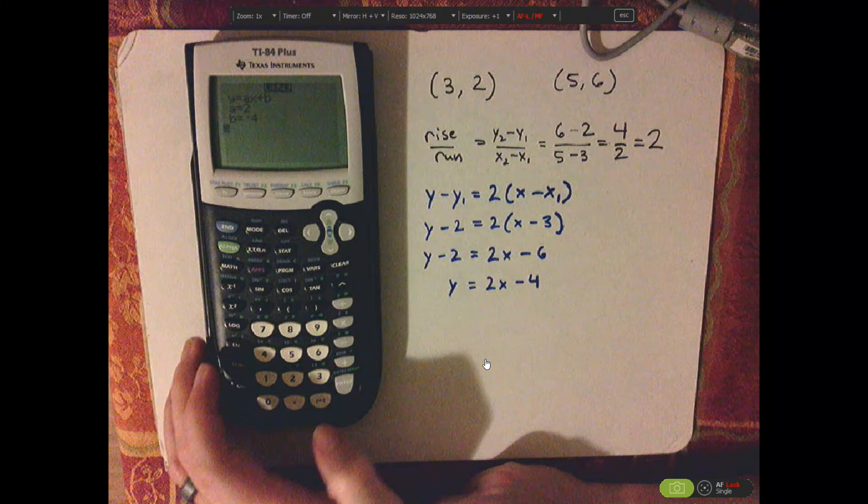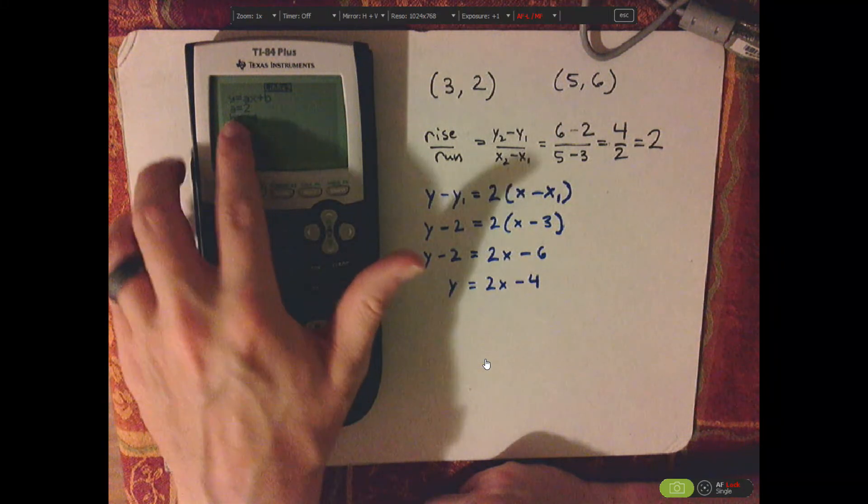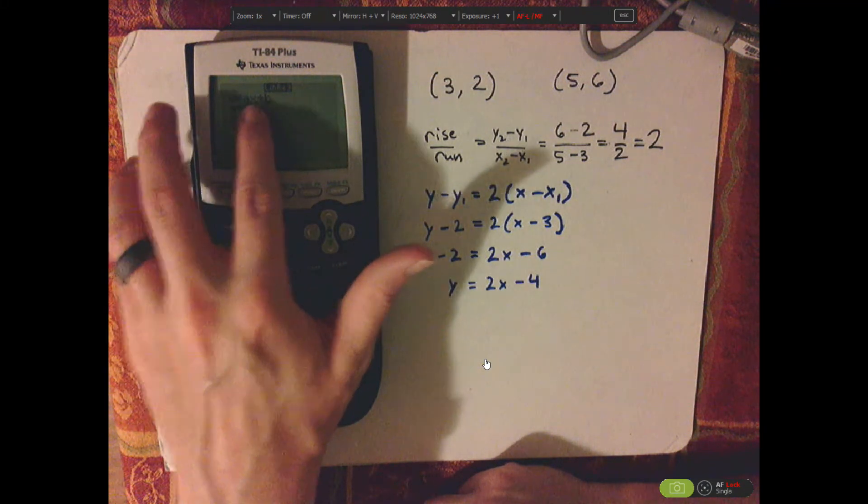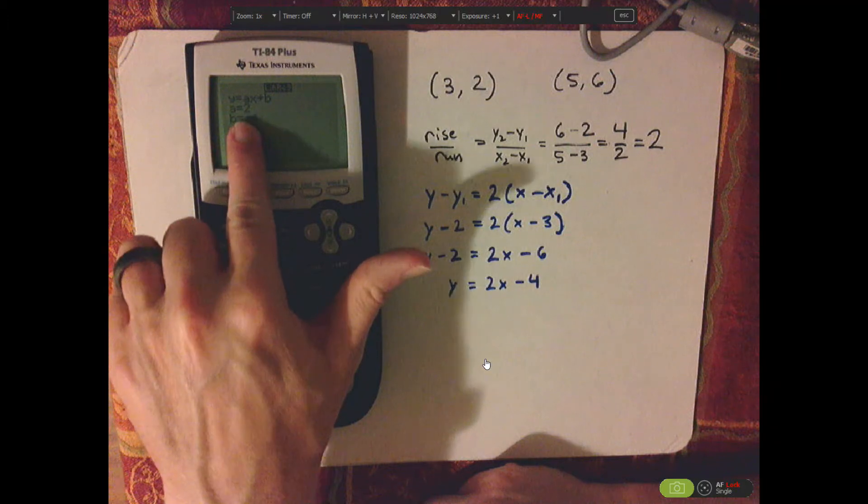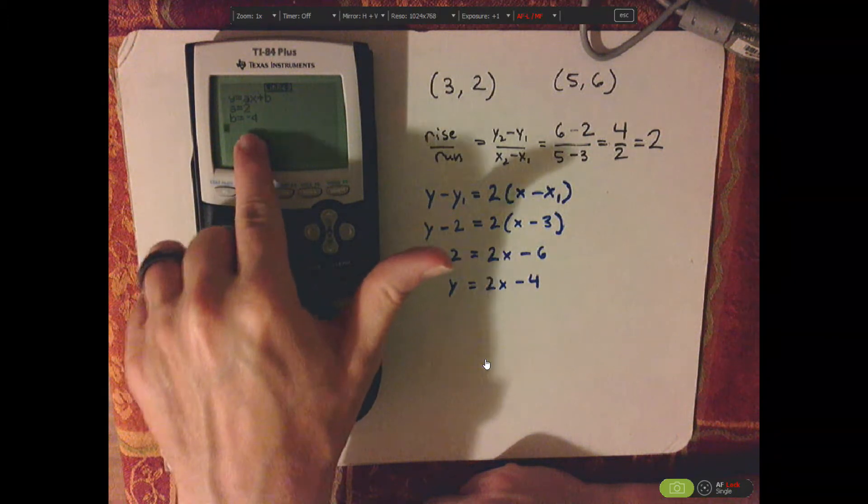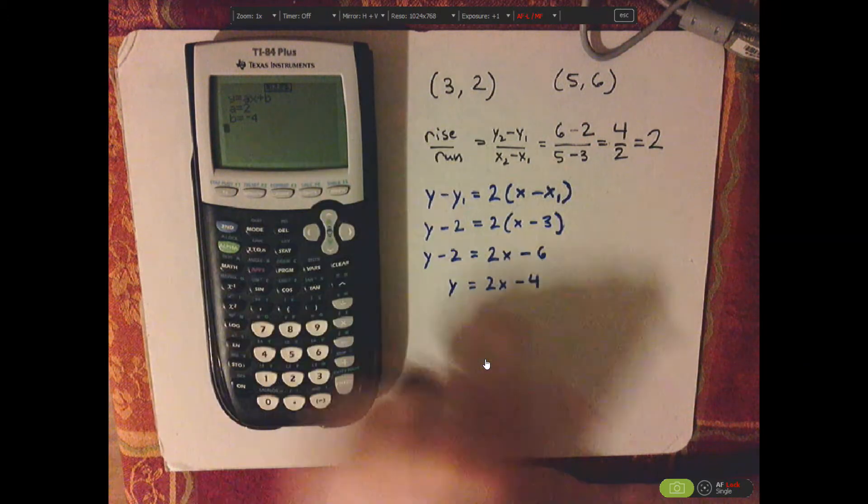Here, then calculate. And there you go. Y equals ax plus b. A equals 2, and b equals negative 4.